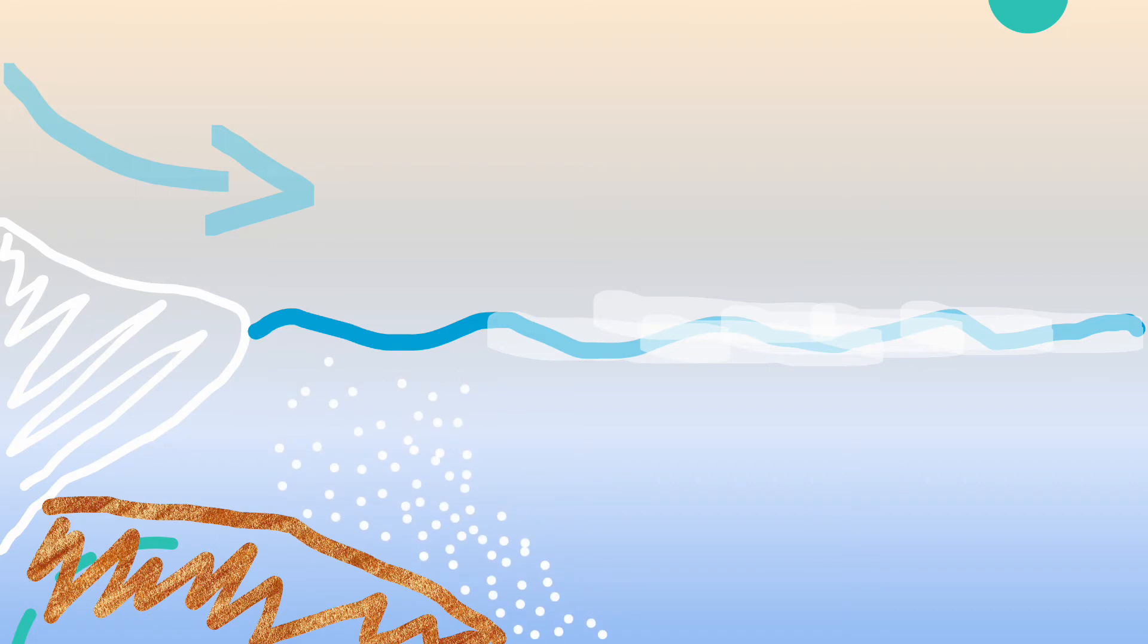This formation of deep water is a large driver in global circulation, specifically the lower part of it. And the water sinking here will travel around the world for hundreds of years, never seeing the surface again.